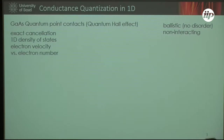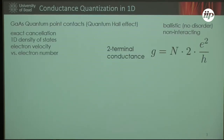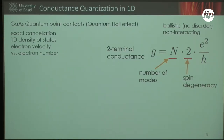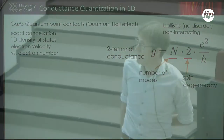In one dimension you get conductance quantization. This is well known and there is a factor of two which comes from the spin degeneracy. So if you're looking at a semiconductor one-dimensional system, for example in gallium arsenide, if you have one transverse mode you expect to get 2e² over h. This is Landauer quantization.